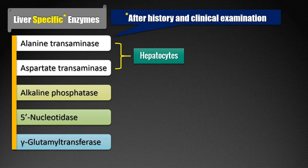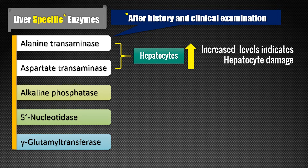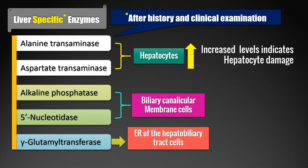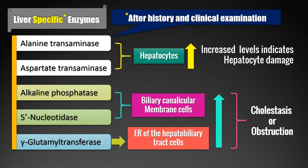ALT and AST are present in the serum in small quantities. Whenever there is gross elevation of these two enzymes, that indicates injury to the hepatic parenchymal cells or hepatocellular disease. As for ALP and 5'-nucleotidase, these two enzymes are expressed by biliary canalicular membrane cells or sinusoidal membrane, and GGT is expressed by microsomes or endoplasmic reticulum of the hepatobiliary tract cells. Their elevation indicates cholestasis or obstruction.